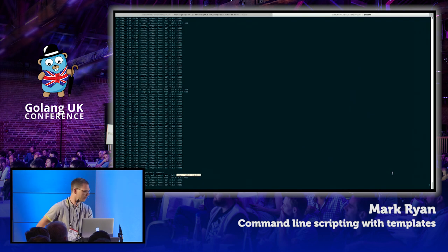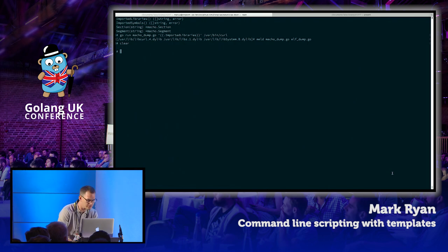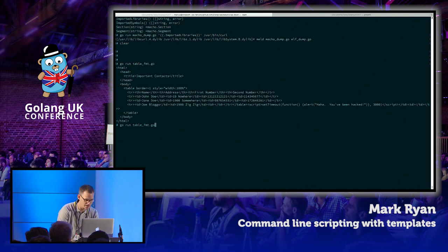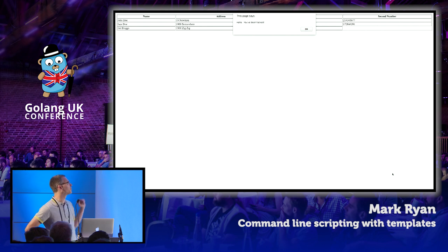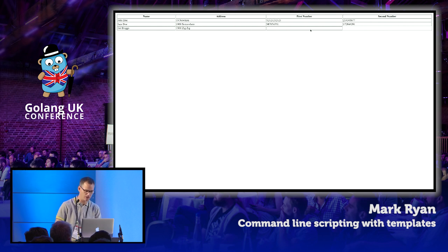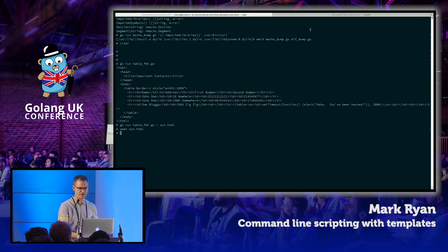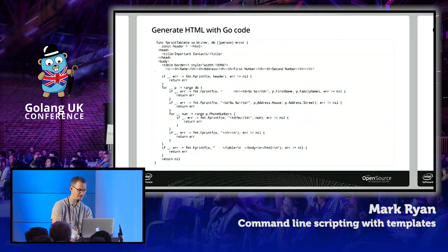I have the program here. I'm going to run it, redirect the output to a file, and open that file in my browser. You see the table, which isn't very good. And you also see — even worse — a message which says I've been hacked. The reason is that in my in-memory model there was an HTML injection attack. Our fprinttable function just copied that injection attack directly into the resulting HTML, which is pretty bad.